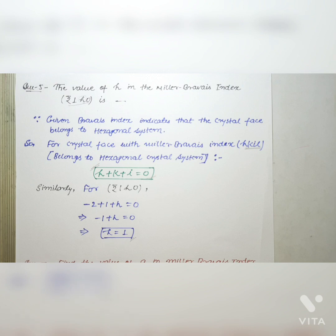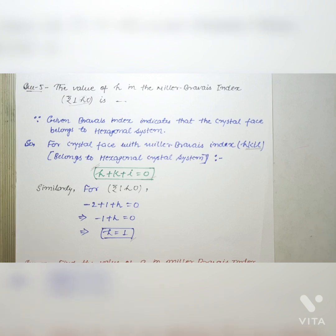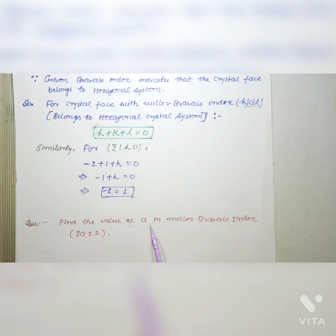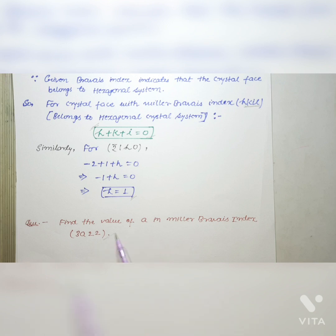Here is a practice question: find the value of A in the Miller-Bravais index (3, A, 2, 2). Solve this and comment the answer in the comment section — what is the value of A for this Miller-Bravais index?